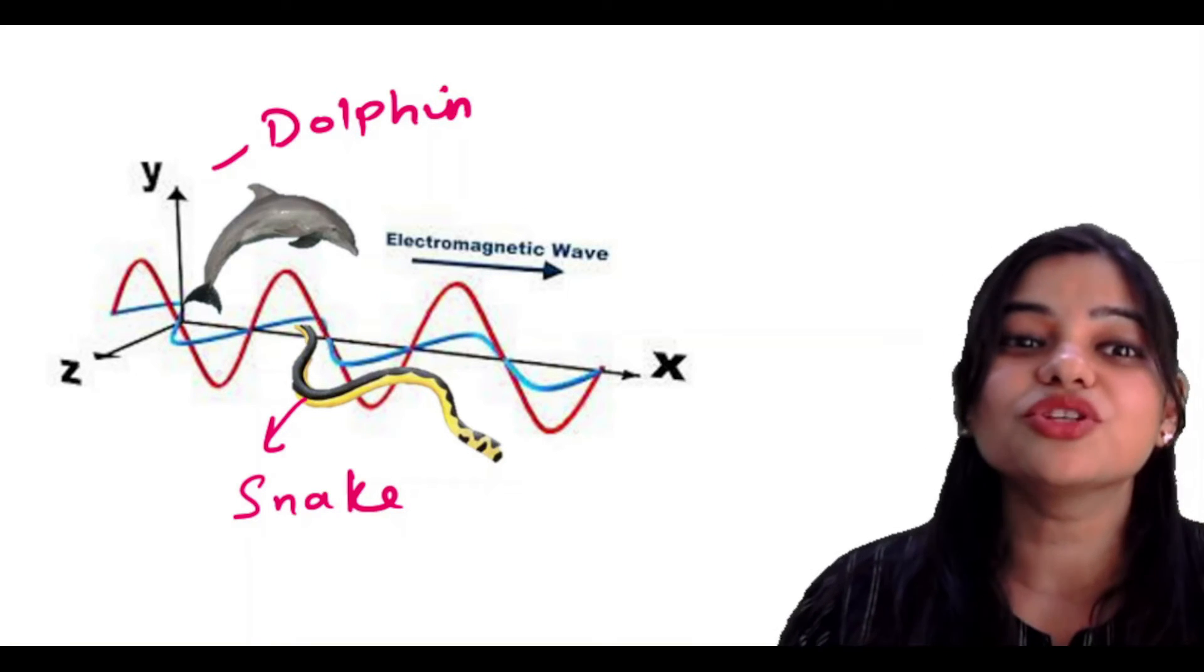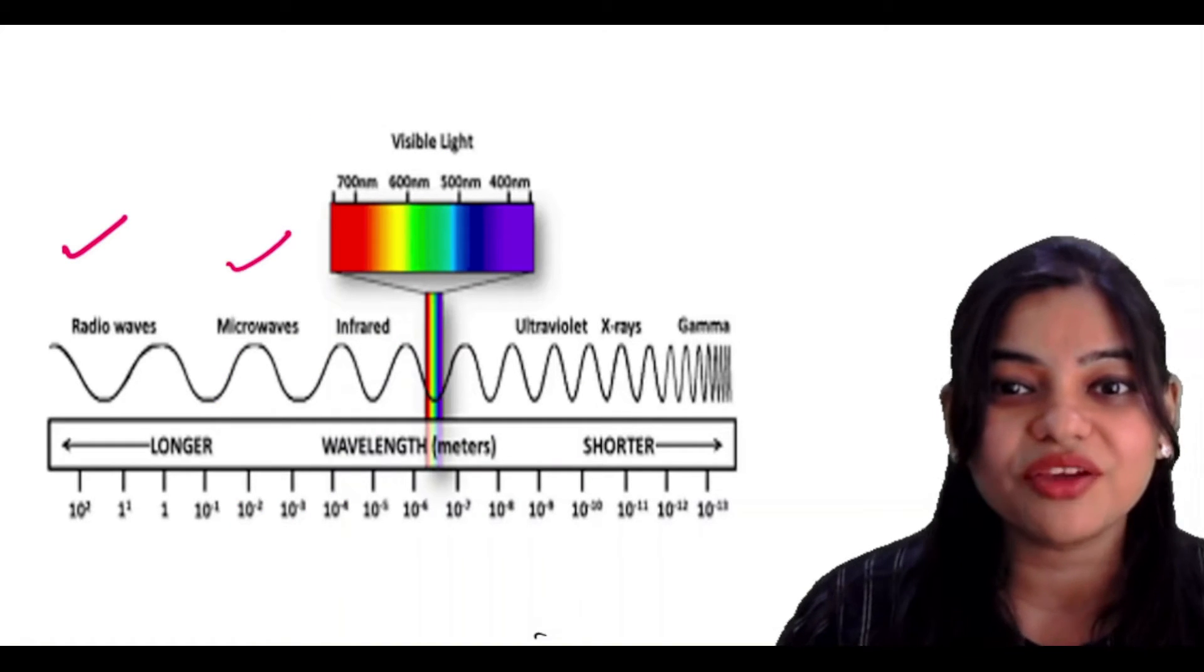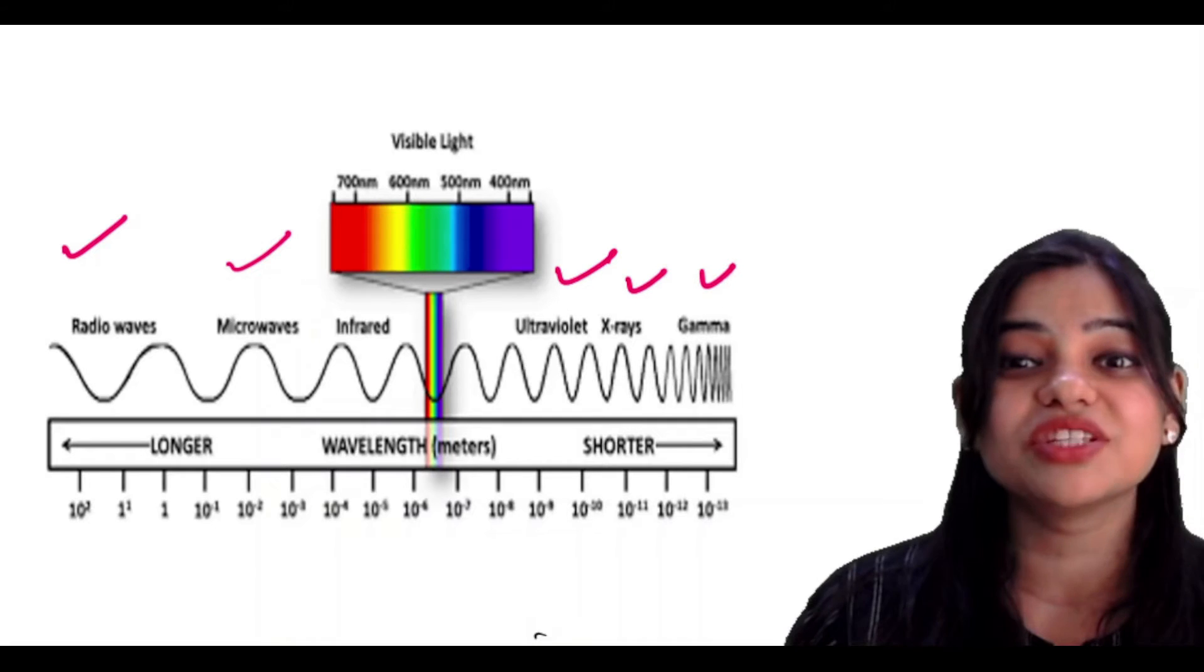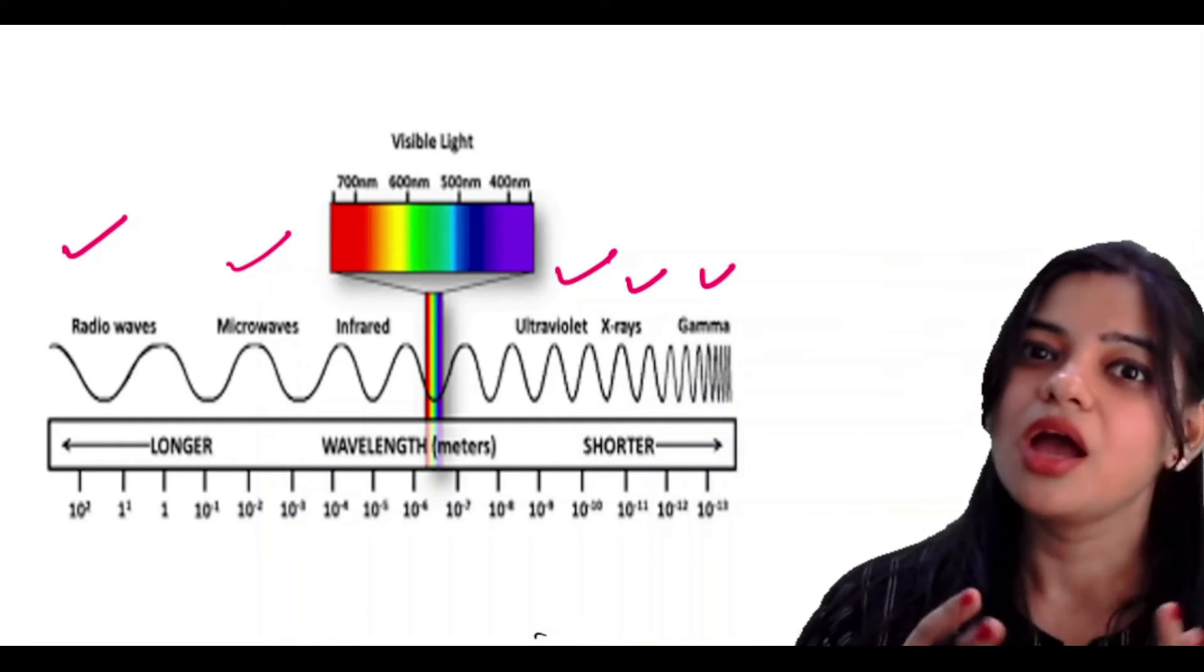Now which are all electromagnetic waves? Radio waves, microwaves, UV rays, X-rays, visible light. Which are all electromagnetic waves? I don't understand. What are we all?